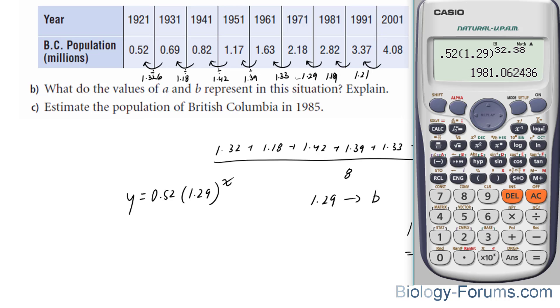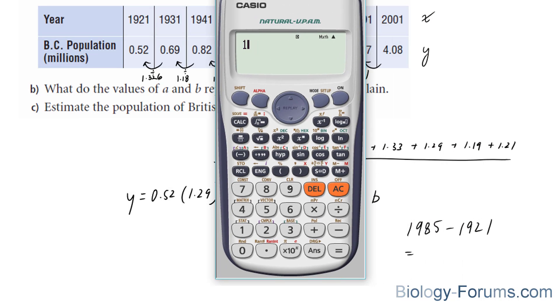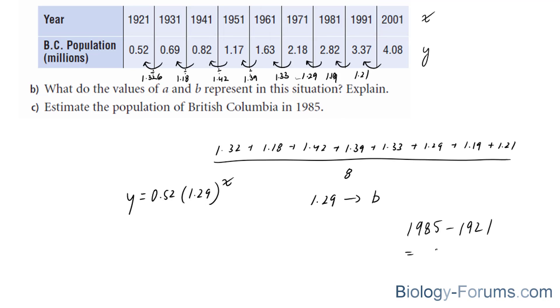And by doing that, you get 1985 minus 1921 equals 64, which will be your x value. Let's plug that number in.